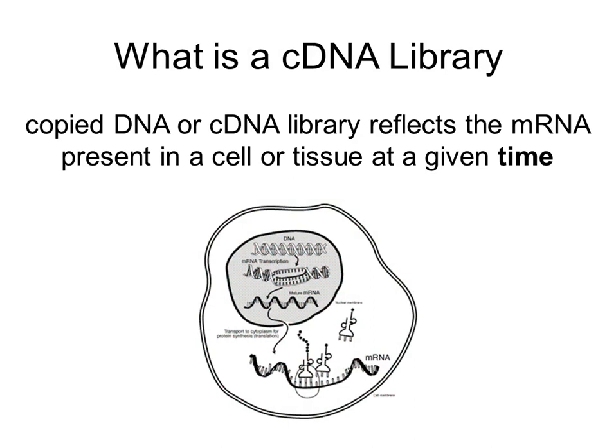The cDNA library reflects all of the messenger RNA that is present in a cell or tissue at a given time. So it gives you a snapshot of all the proteins that are being produced by a given cell or tissue at a given time point.